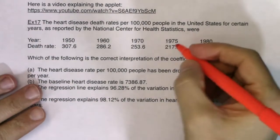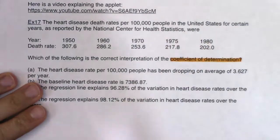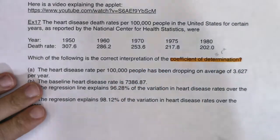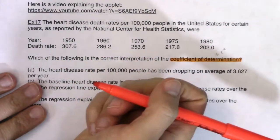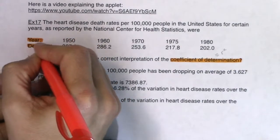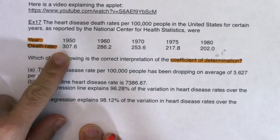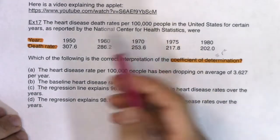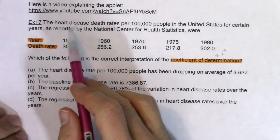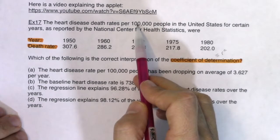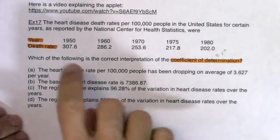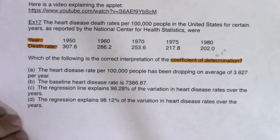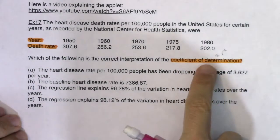When I hear coefficient of determination, I want to interpret the r squared value, not the r value. The two numerical variables are year and death rate. In 1950, about 307.6 per 100,000 people died from heart disease; in 1980 it was about 202 per 100,000 — a really significant decrease.